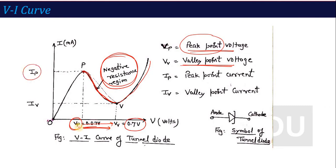After this point, the tunnel diode works as a normal diode. As you increase the voltage, the current increases according to the normal diode current equation. To summarize the first portion: due to the tunneling effect and heavy doping, the depletion layer width is very low, allowing higher current up to the peak point. The main property is that with increasing forward voltage, current decreases in the negative resistance region.